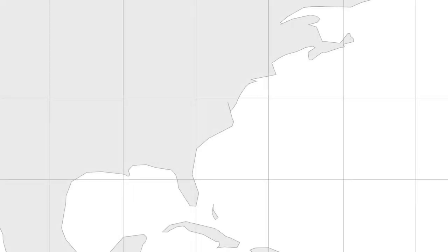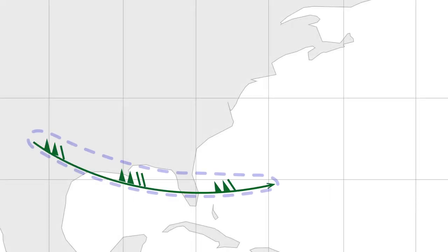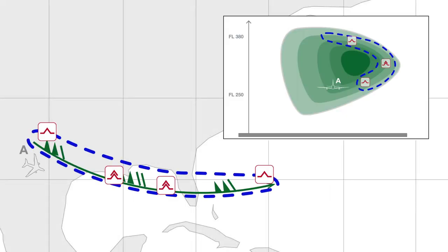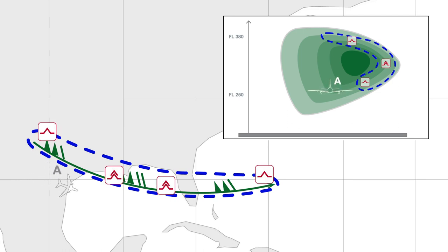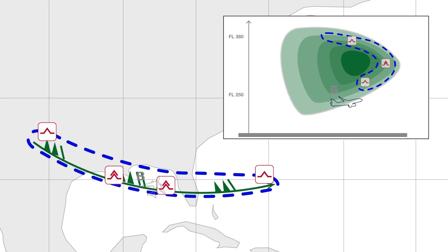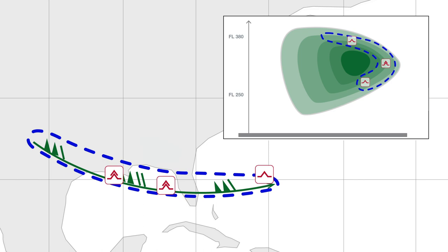In this case, for aircraft A, which is already in cruise, the turbulence may be higher when crossing the core of the jet. For aircraft B, clear air turbulence could be encountered between flight level 250 and flight level 380.